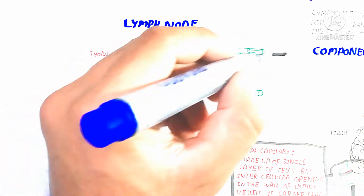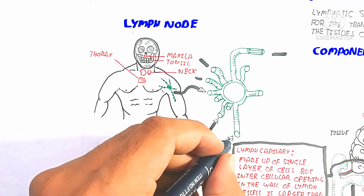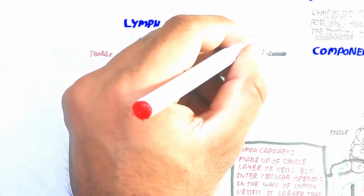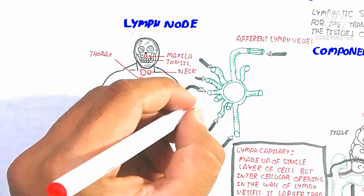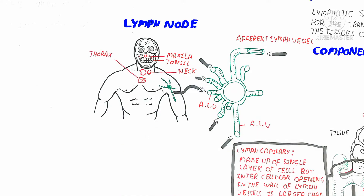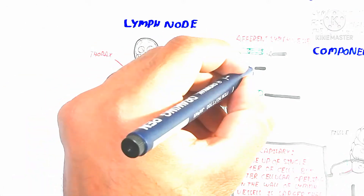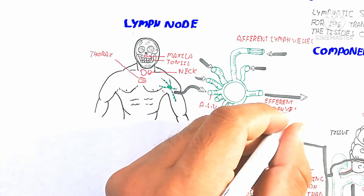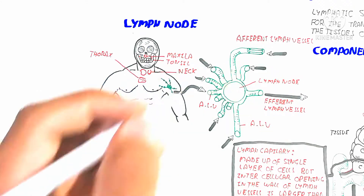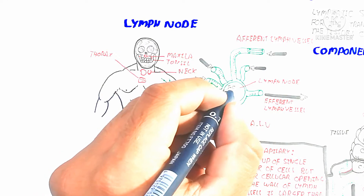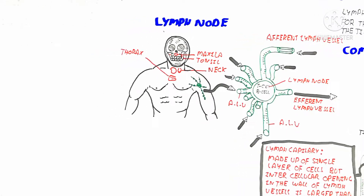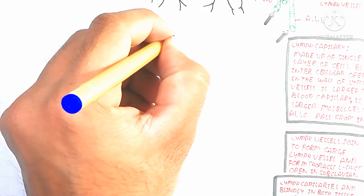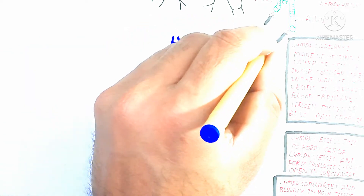The lymph node contains many lymphatic vessels. Afferent lymph vessels carry fluid toward the node — afferent means moving toward the node. On the other hand, the efferent lymph vessel moves from the lymph node toward the subclavian vein. There are many afferent lymph vessels but only a single efferent lymph vessel per lymph node, meaning it releases lymph from the node through one outflow path.